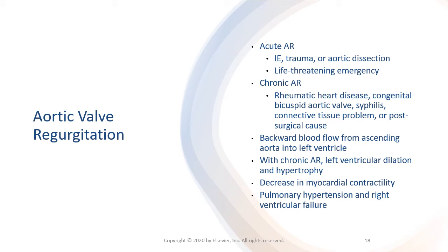Aortic regurgitation may be the result of primary disease of the aortic valve leaflets, the aortic root, or both. Trauma, infective endocarditis, or aortic dissection can cause acute aortic regurgitation, which is a life-threatening emergency. Chronic aortic regurgitation usually results from rheumatic heart disease, a congenital bicuspid aortic valve, syphilis, a connective tissue problem, or a post-surgical cause.